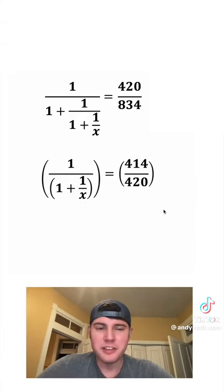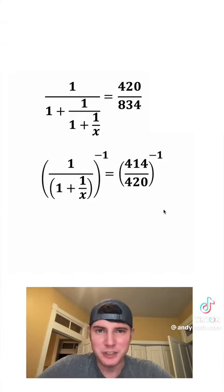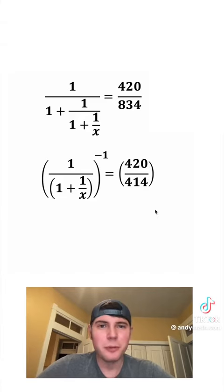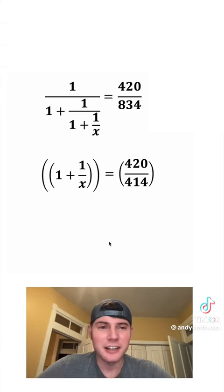Let's smush this over, put parentheses around it, and do another negative 1 exponent. Let's take the reciprocal of both sides. And then anything over 1 is just that anything.